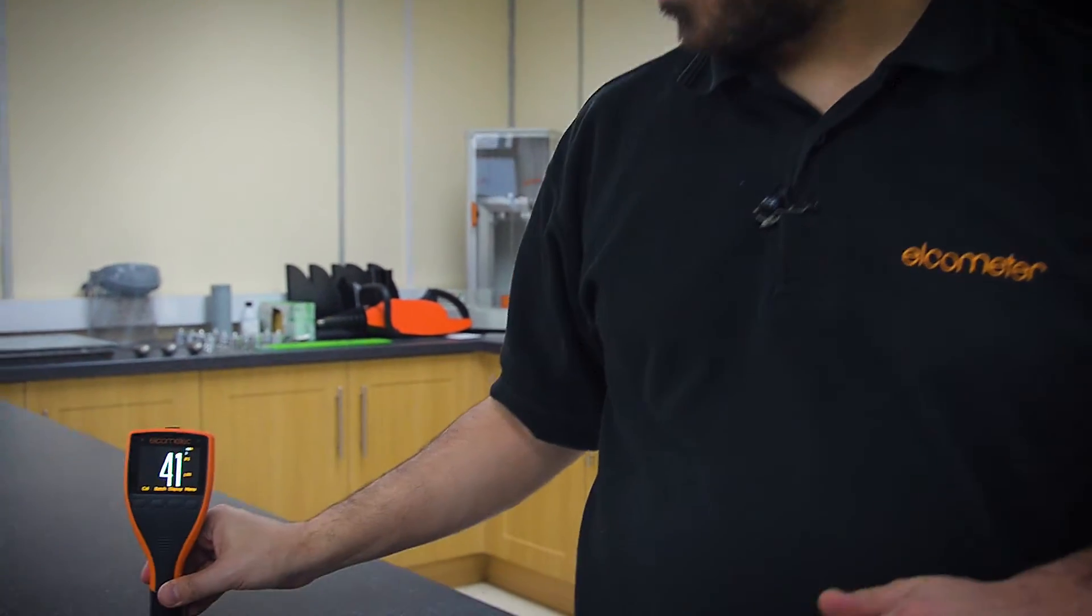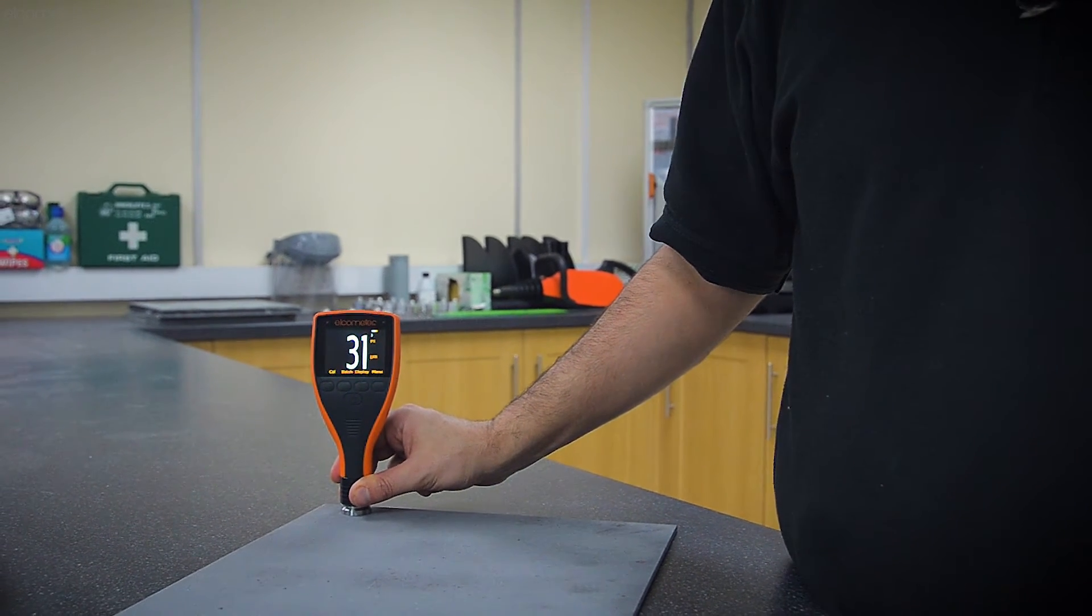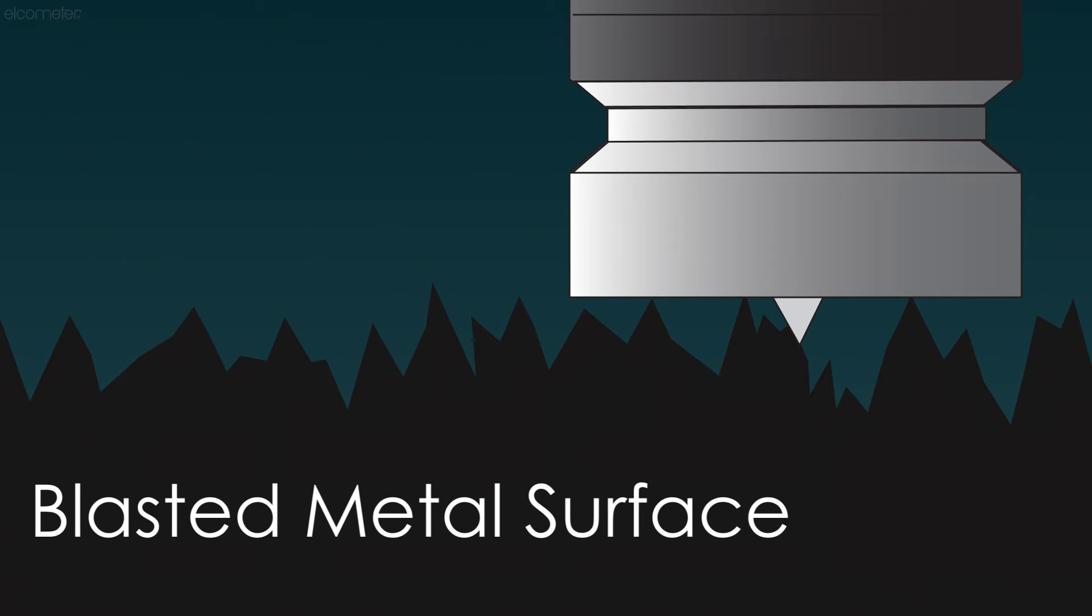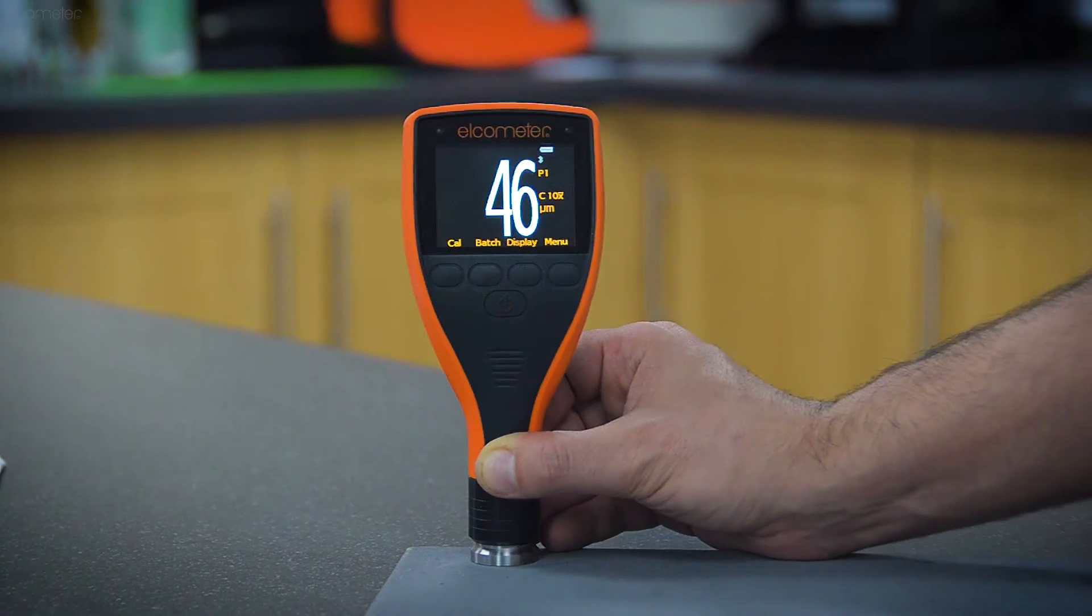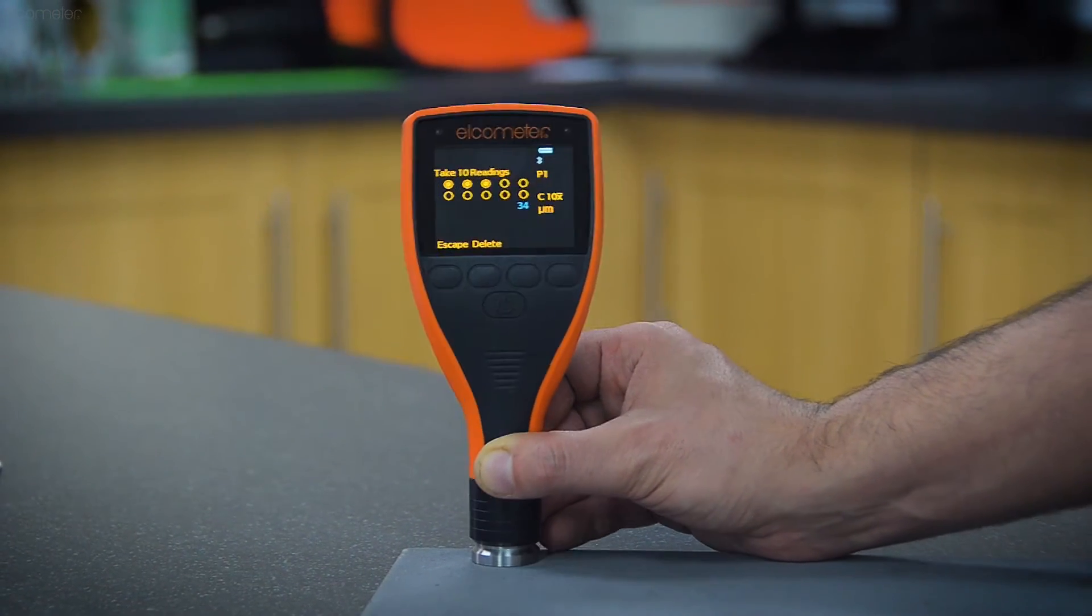As I've already mentioned, taking just one reading on a blasted surface will not be representative of the entire surface profile, as the needle could rest in a valley or on any part of the slope. That's why you need to take a number of readings over a small area to get a statistically valid measurement.